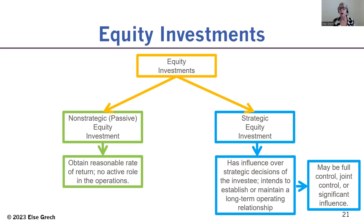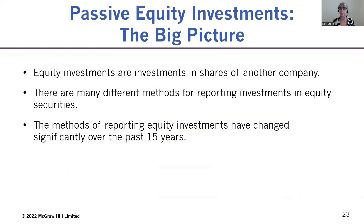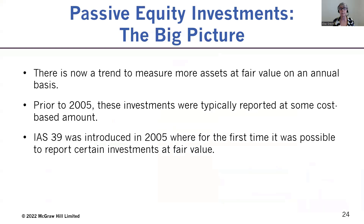Now, how are equity investments — strategic or non-strategic — reported? We're going to start by looking at how non-strategic or passive investments are recorded and reported, beginning with a brief history. Prior to 2005, passive investments were reported at generally some cost-based amount. They were written down if impaired in value, but passive investments were never written up. Instead, gains were recognized only when the passive investment was sold.